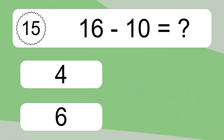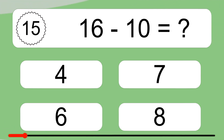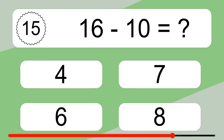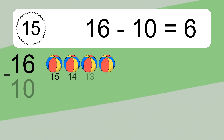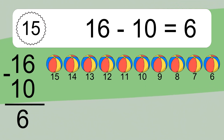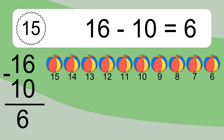16 minus 10 equals what? 16 minus 10 equals 6. Let's count it: 15, 14, 13, 12, 11, 10, 9, 8, 7, 6.